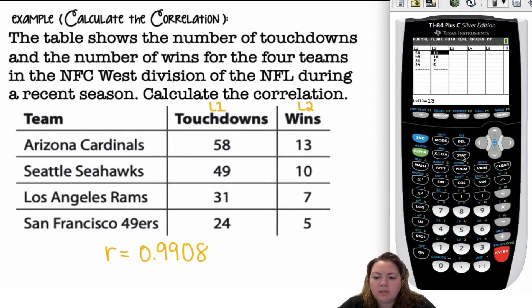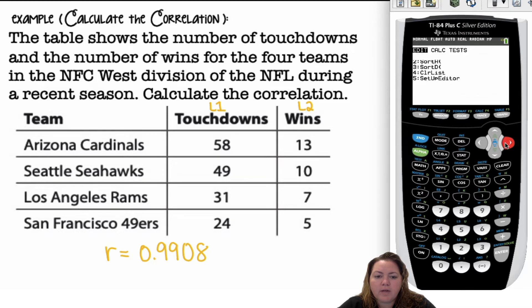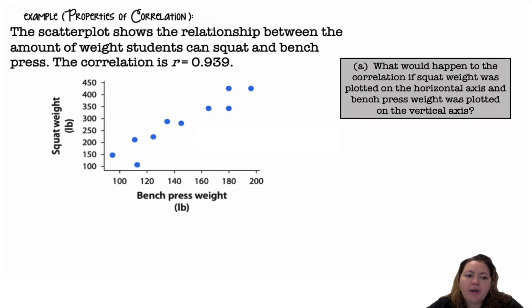Once we have the data in our list, go to stat, go over to calc, pick option 8, linear regression A plus Bx. My x list is list 1, my y list is list 2. I don't need to worry about the rest of this stuff, and I'm going to go down to calculate. R, my correlation coefficient, is 0.99078, which I rounded to 0.9908.